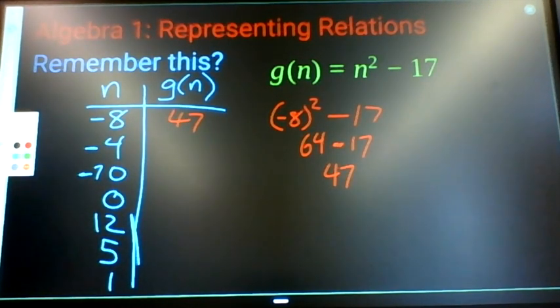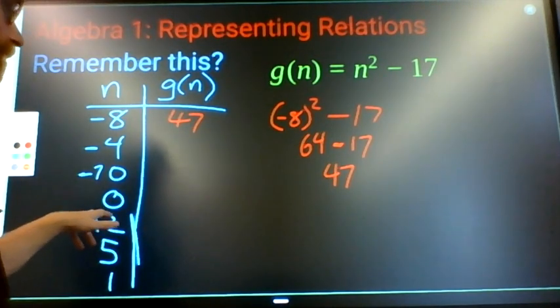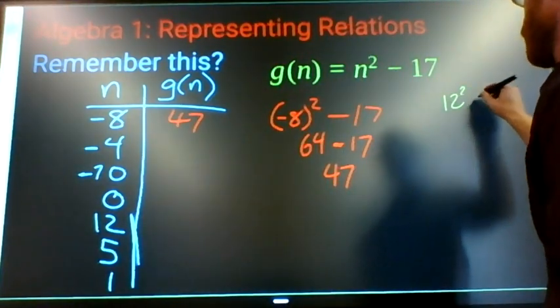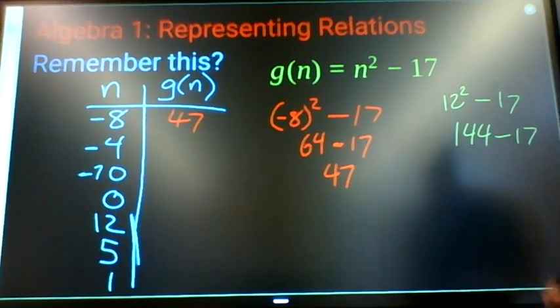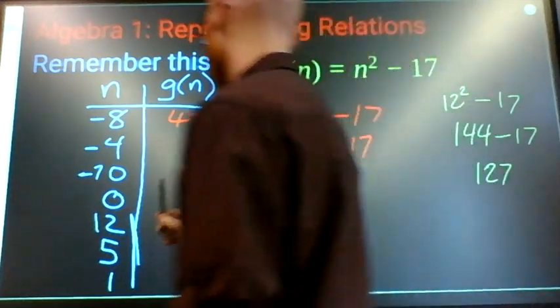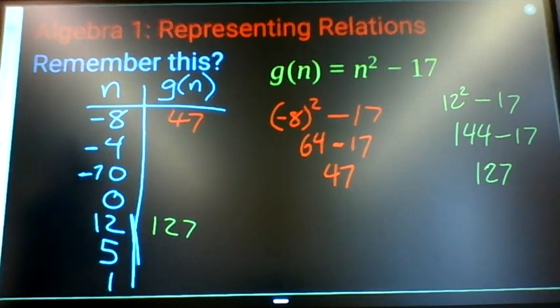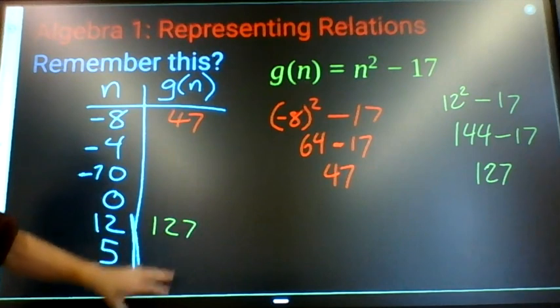Same idea for each of these. When n is 12, I'll have n squared, 12 squared minus 17. 12 squared is 144 minus 17, which is 127. When n is 12, the function or the relation equals 127.